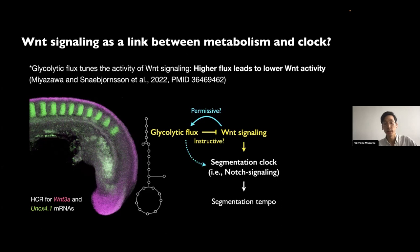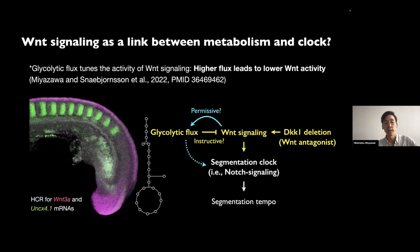To distinguish instructive from permissive, I decided to manipulate Wnt directly by deleting a Wnt antagonist called DKK1. The idea is that DKK1 deletion should rescue the clock phenotype if the role of glycolysis is instructive, because in that case Wnt signaling activity is the bottleneck for clock tempo. On the other hand, if the role of glycolysis is permissive, DKK1 deletion would not rescue the tempo because flux would be the bottleneck.